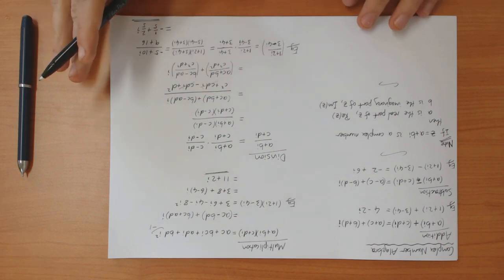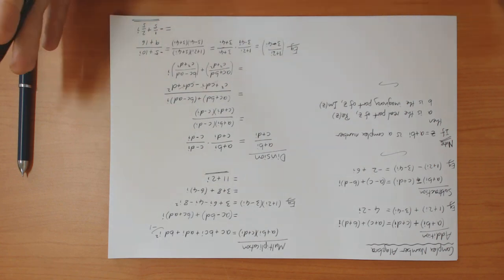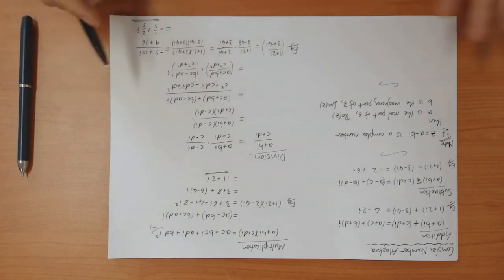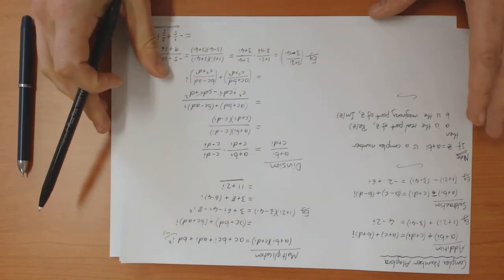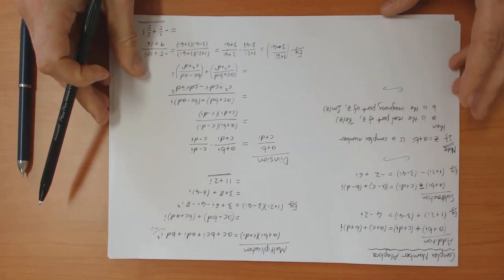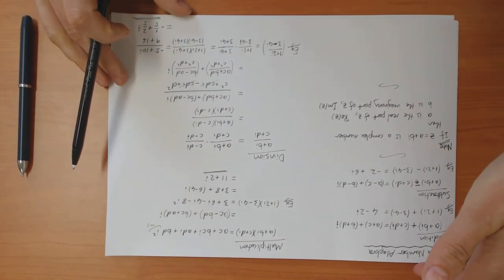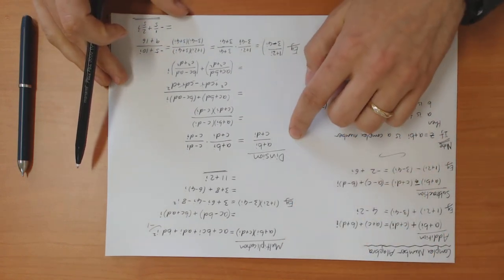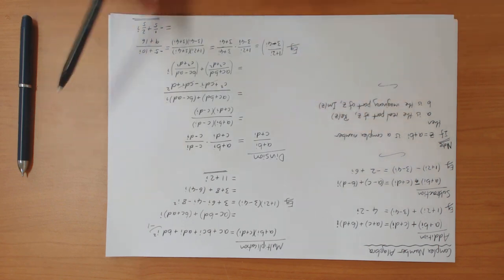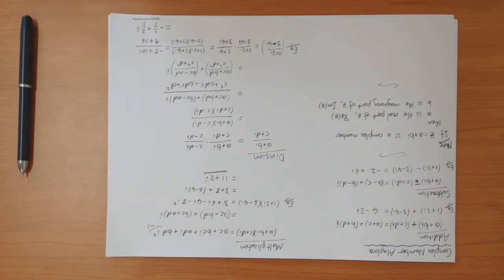So this defines the four basic arithmetic operations — how you can add, subtract, multiply, and divide complex numbers. That's it for this video, and in the next video I'm going to look at slightly more complicated functions.